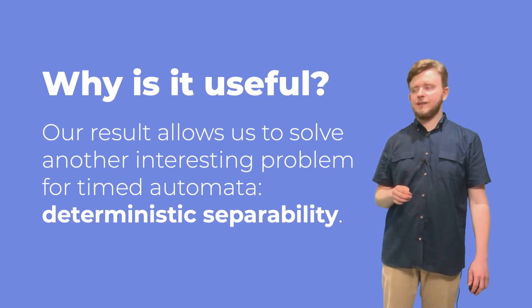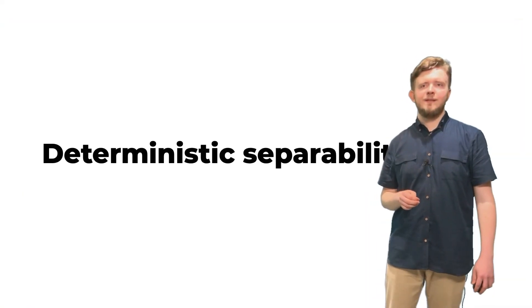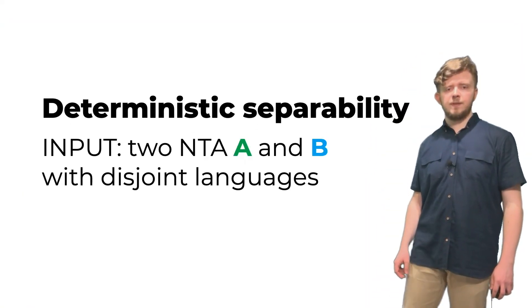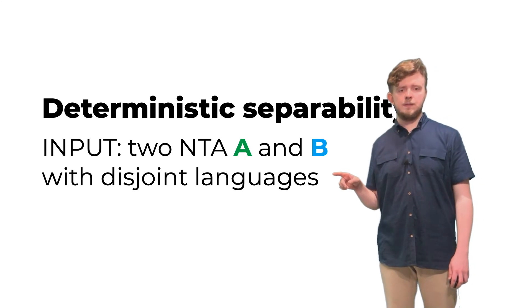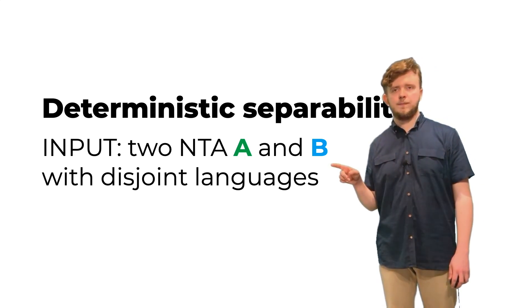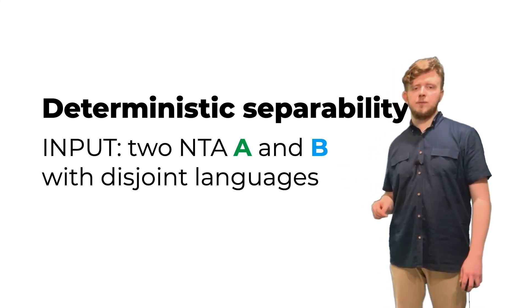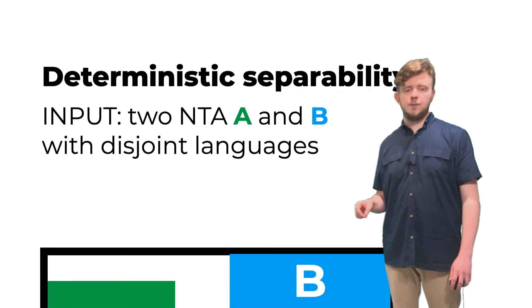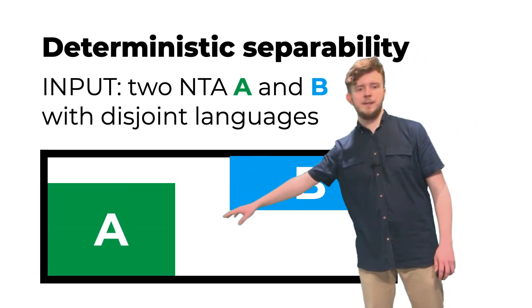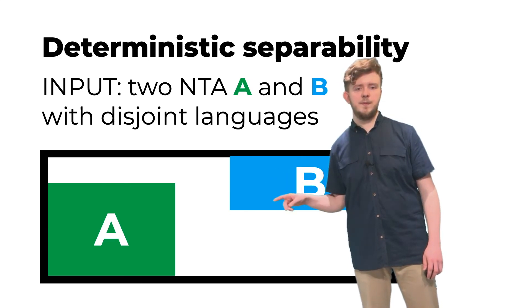Let me now tell you why we think our results are interesting. Here the answer is because they allow us to solve another interesting problem about timed automata, the deterministic separability question. What is deterministic separability? Well, it's a very simple and natural problem. We are given two automata, A and B, which are non-deterministic, and the languages do not intersect. We draw it like this, where those rectangles here are languages of A and B. And this black rectangle is just the set of all possible timed words.